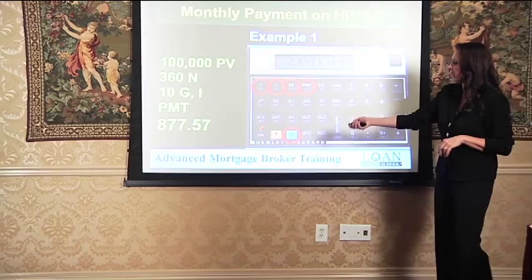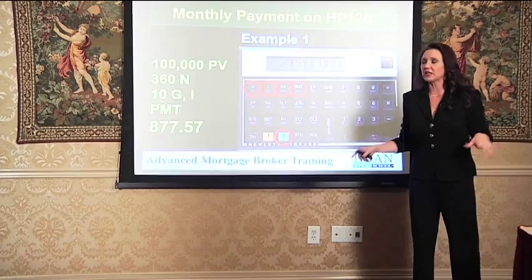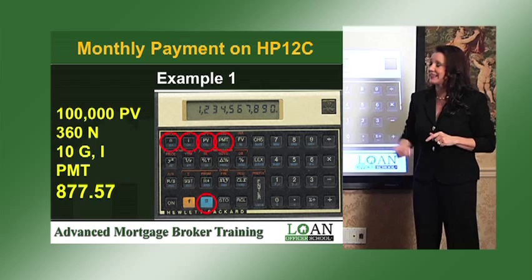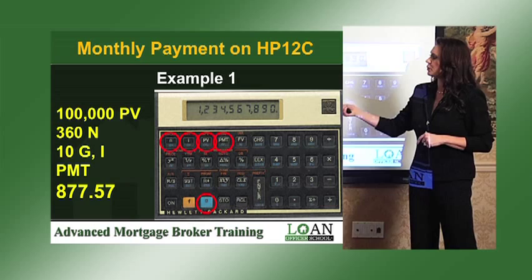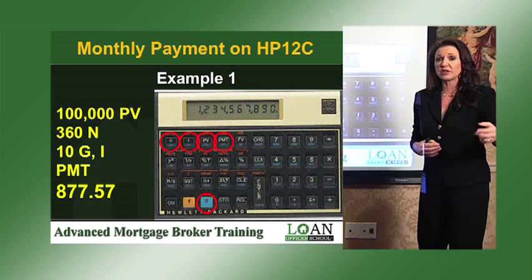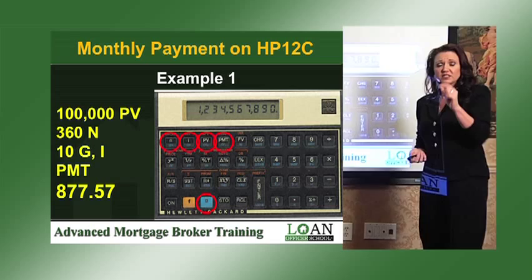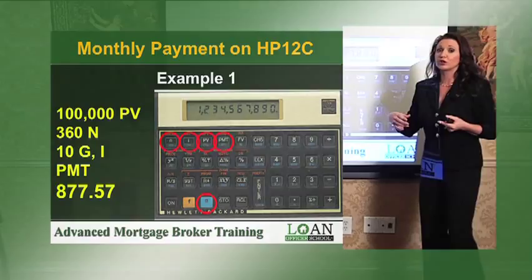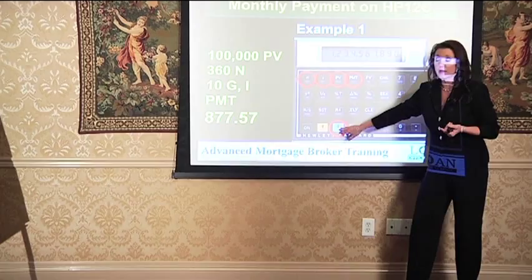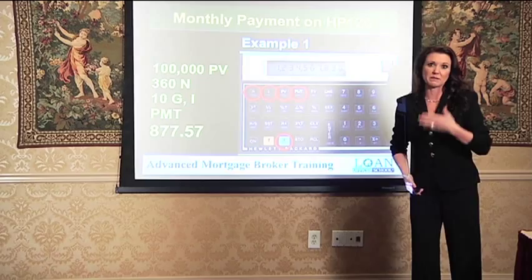You clear it by hitting your F function key and CLX, which stands for clear everything. So function clear, clears it all out — run your 100,000 loan amount, your 360 term, your 10 GI, your payment again, and your answer should come up to be 877.57. You might be wondering why you're doing the term in months. Because we're trying to figure out what the payment is going to be if it's fully amortized over that period of time. If you want to add yourself an additional shortcut, for a 30-year term, you can go 30, G for gross — which multiplies by 12 — then N, and that's going to turn it into the number of months you want your loan to be paid back over.